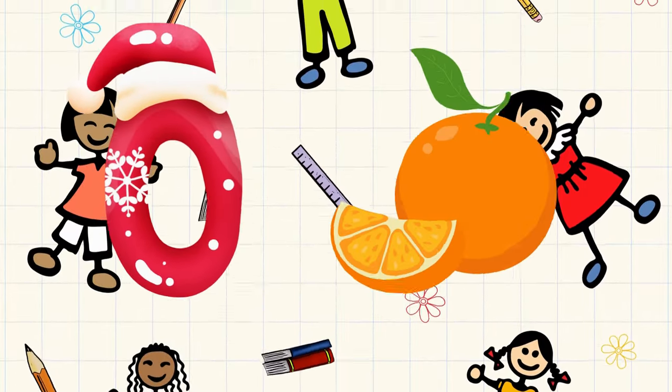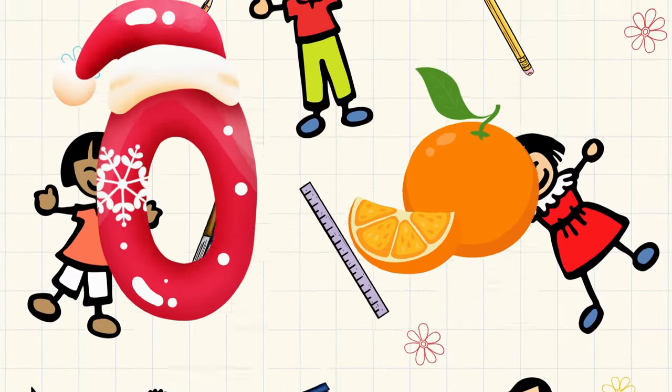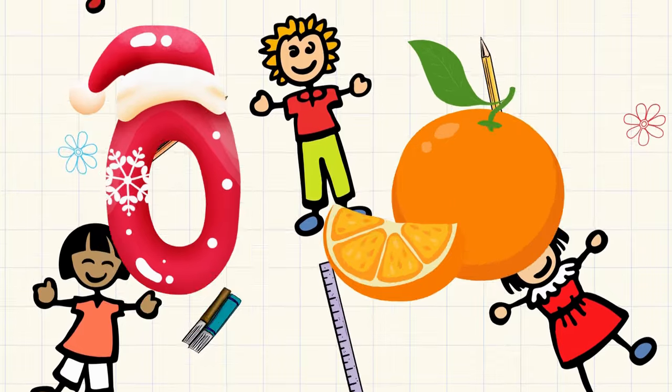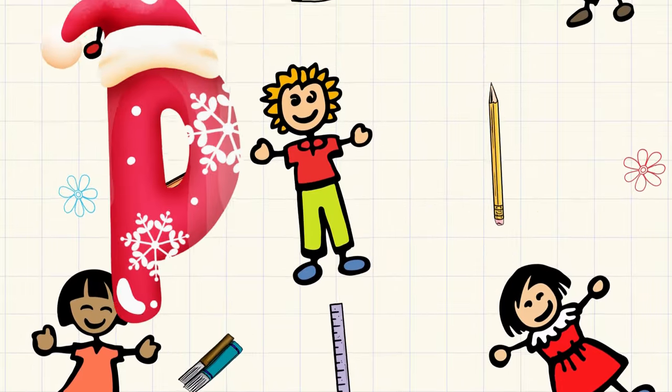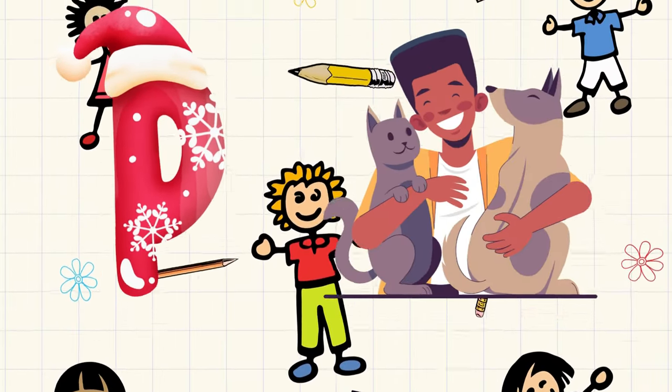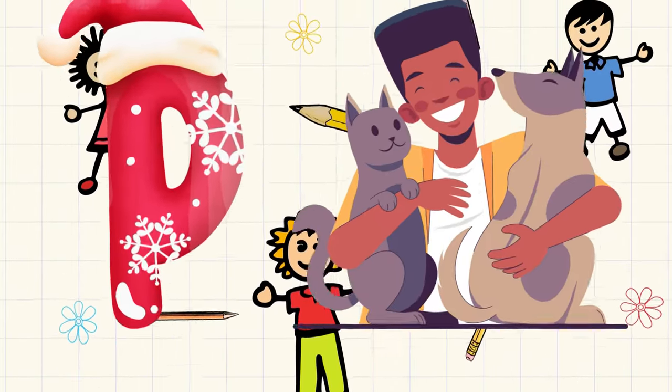O is for orange, o-o-orange. P is for pet, p-p-pet.